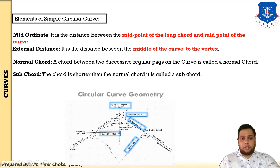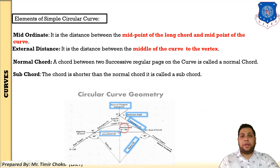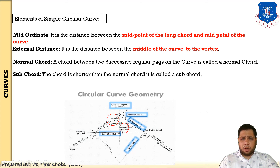Eleventh, mid-ordinate: it is the distance between the mid-point of the long chord and the mid-point of the curve. Twelfth, external distance: it is the distance between the middle of the curve and the vertex. The vertex point is at the top of the triangle formed, and the distance from the vertex to the middle of the curve is called the external distance.